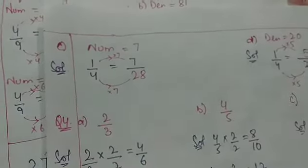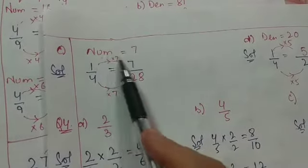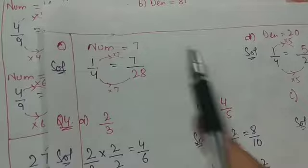Then the question part number 3rd is numerator should be 7. So 1 into 7 is 7. So 4 into 7 will be 28.